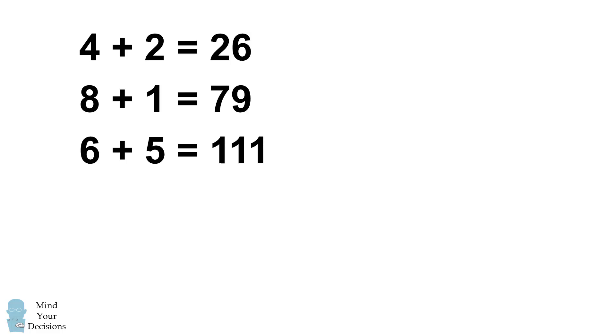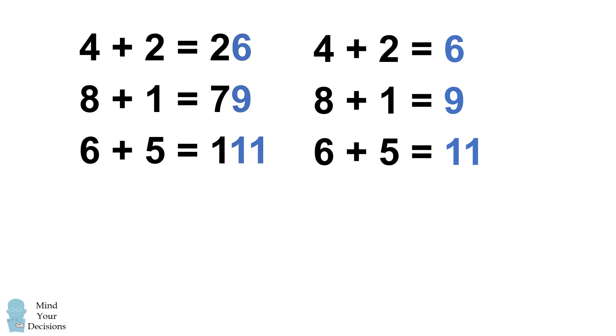So what's the pattern in this puzzle? Let's do some basic arithmetic with the numbers. 4 plus 2 is equal to 6, 8 plus 1 is equal to 9, and 6 plus 5 is equal to 11. These numbers are part of the original puzzle.